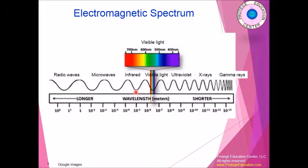Infrared we cannot see, and it's used mainly with a particular filter as a heat sensor. If you emit heat, you actually emit infrared rays that can be seen by special filters, special binoculars, or special goggles. The visible light is what we see, and within it there are many different wavelengths shown as different colors. The next one is ultraviolet rays, which we also cannot see — we can only see visible light within the electromagnetic spectrum.